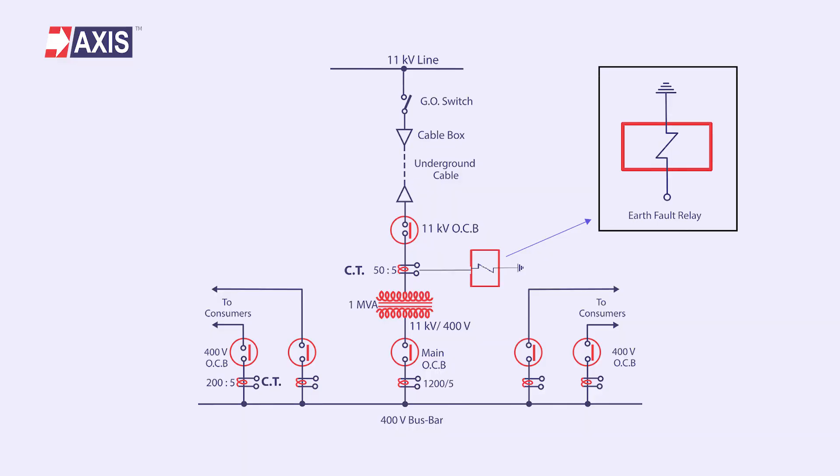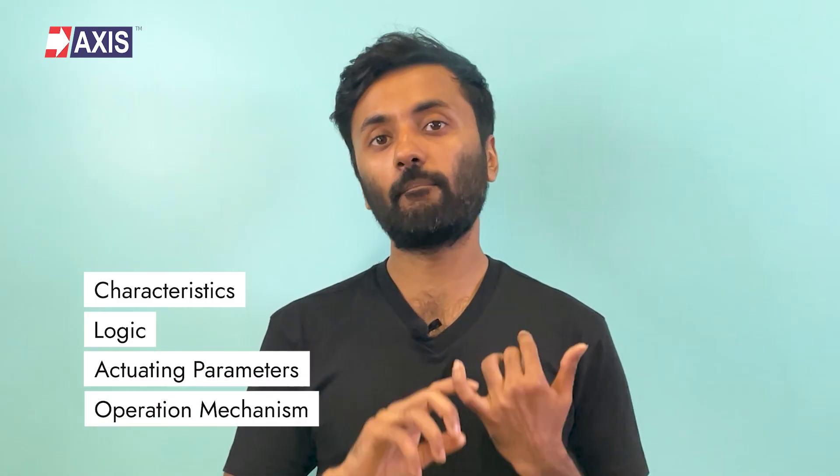Now getting back to the symbols, let's look at protection relays. The primary function of protective relays in substations is to quickly remove any element from service when it suffers a short circuit. It also protects when a part of the system starts operating in an abnormal manner which might cause damage or interfere with the operation of the complete system. There are different types of protection relays mainly based on their characteristics, logic, actuating parameters and operation mechanism.